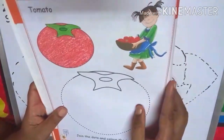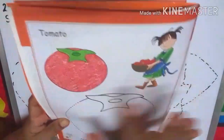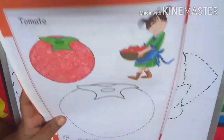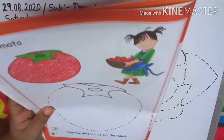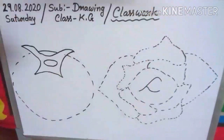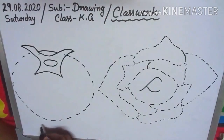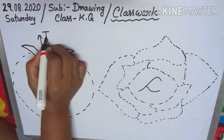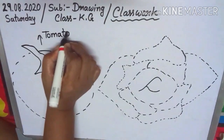See the picture. This is tomato. See, the color is red and first you draw. Join the dots first. Follow me children. See, this is tomato. So right here, tomato. You know tomato color is red.